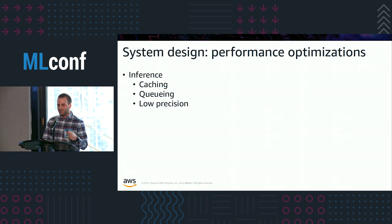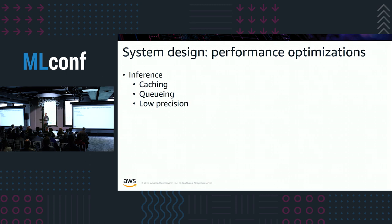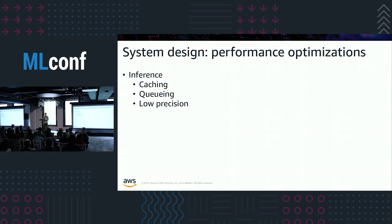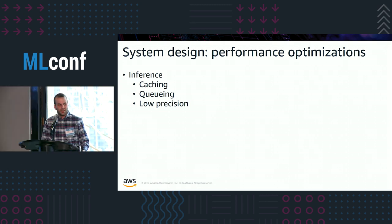Moving on to inference, the tricks here are more common to typical web services, such as caching and queuing. With caching, you think about bringing the model weights as close to the unit of compute as possible. With queuing, you can drive utilization by batching multiple concurrent requests for a fixed latency timeout — they get batched into the GPU and utilization goes up, at the cost of increased response time for requests that come in last. Finally, there's low precision: in the extreme case, a binary neural network where weights are single bits, but similarly to training, you can use 8-bit integers or 16-bit floats.